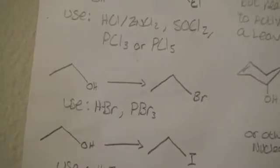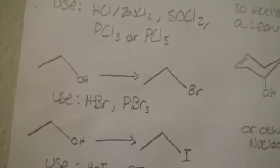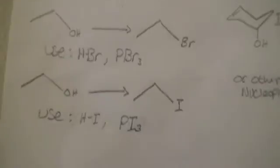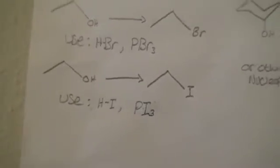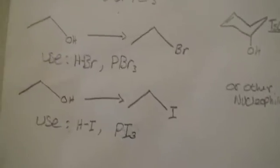For alkyl bromide, HBr is normally used. PBr3 is also a good option. For the alkyl iodide, HI or PI3, those two are pretty similar in what the reagents look like.